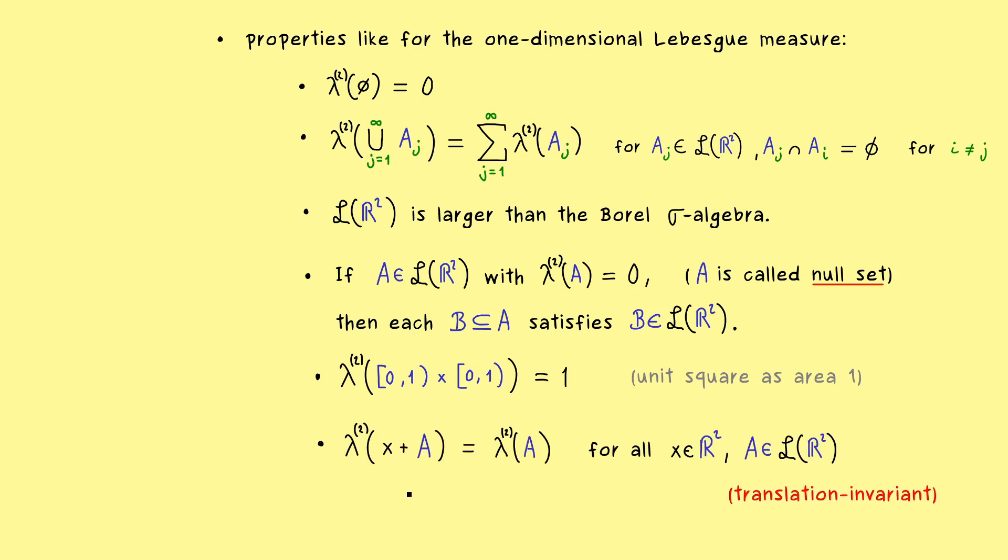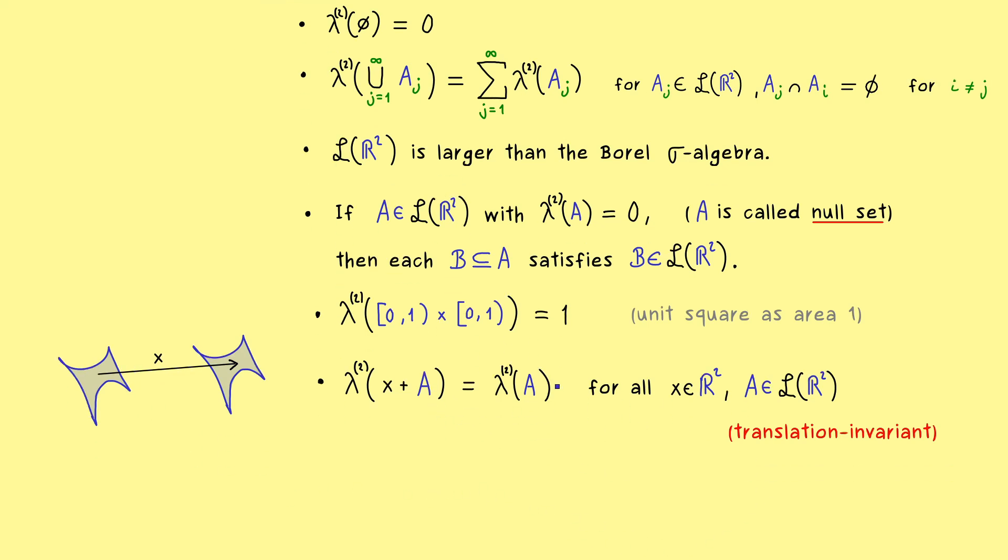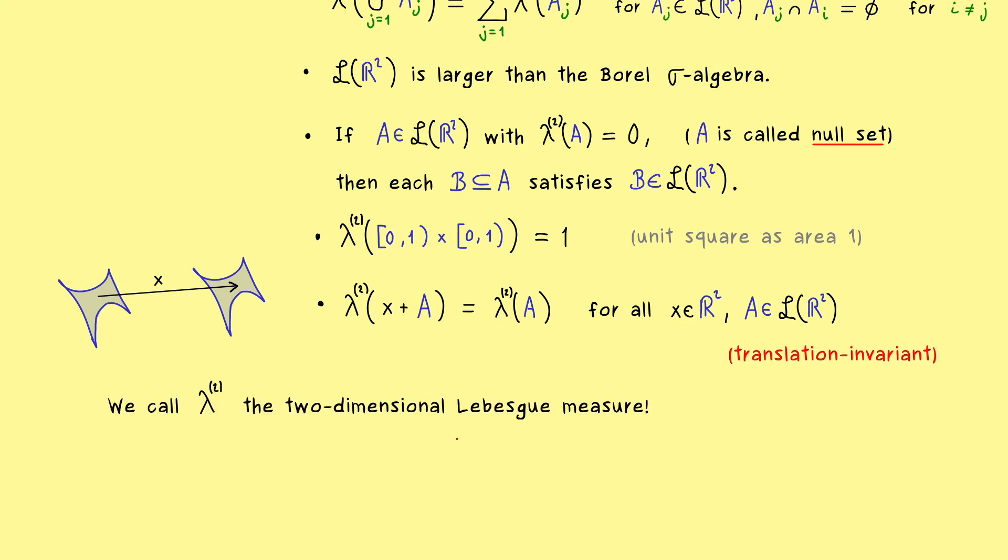And now finally, we also have that the area does not change if we shift it in the plane. So for example, if we have this figure here and we shift it by a vector x, then the area is the same. So this is what we mean when we say that the Lebesgue measure is translation invariant. So indeed, the Lebesgue measure generalizes the concept of measuring areas in the plane R2.